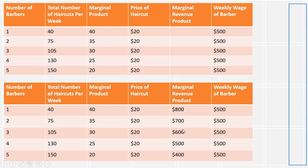How many workers should this firm hire? The firm should keep hiring workers so long as the marginal revenue product is greater than the wage, and stop right at the point where MRP of the last worker equals the wage. Do we want to hire the first worker? Yes — 800 is bigger than 500. The second worker? Yes — 700 is greater than 500, adding more to revenue than to cost. The third worker? Yes — 600 is greater than 500. We hire the fourth worker: revenues go up by $500 and cost also goes up by $500. This is our stopping point.